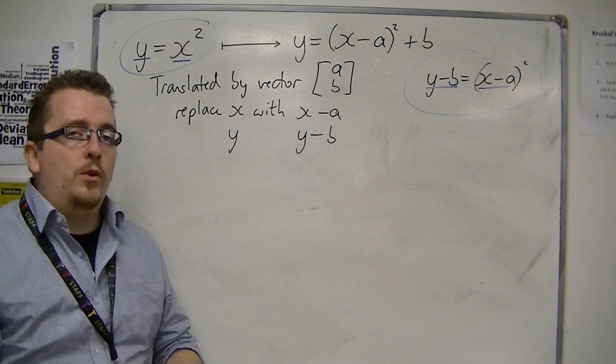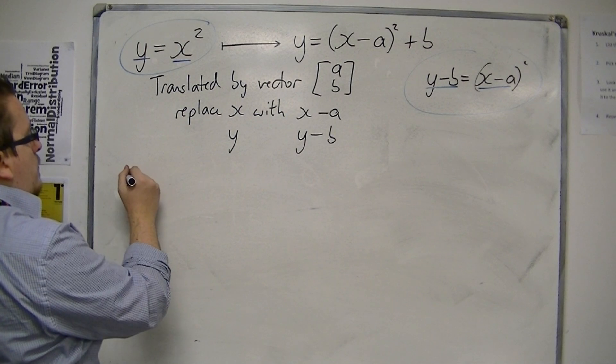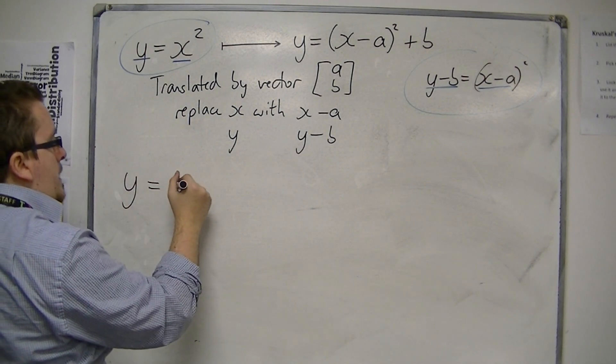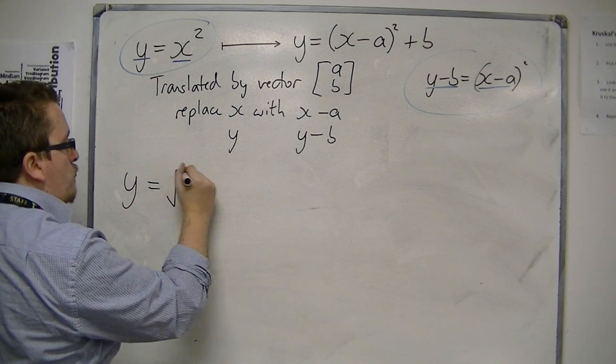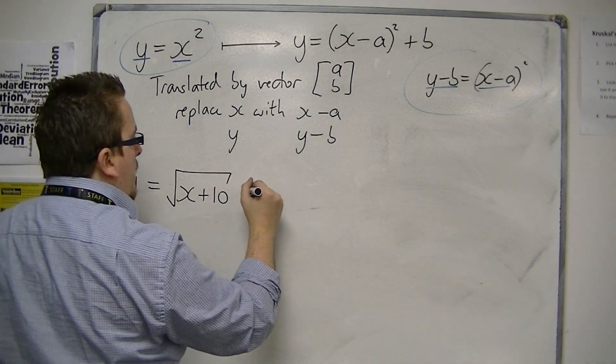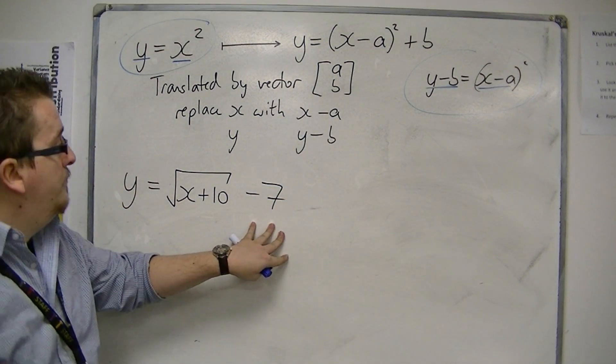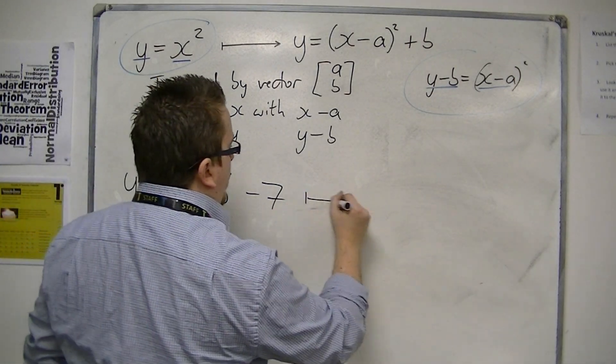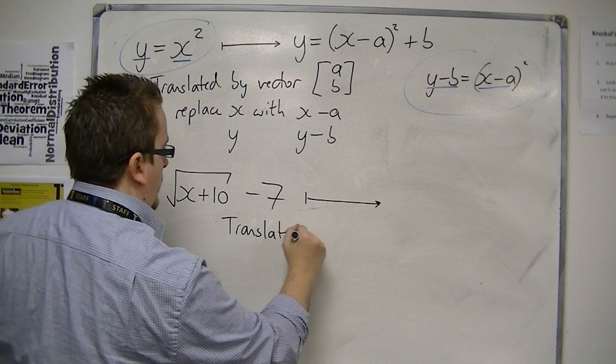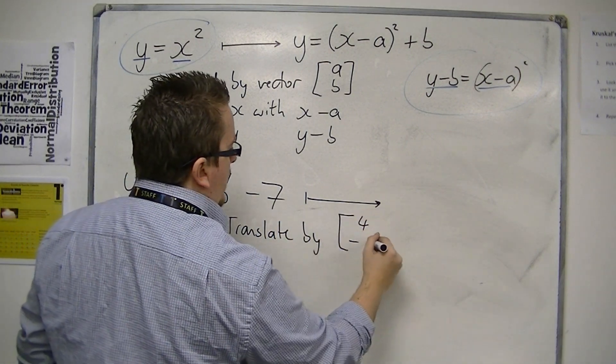So if this is going to work in every way, if we had the graph y equals the square root of x plus 10 minus 7, and then we translated this by the vector [4, -8],